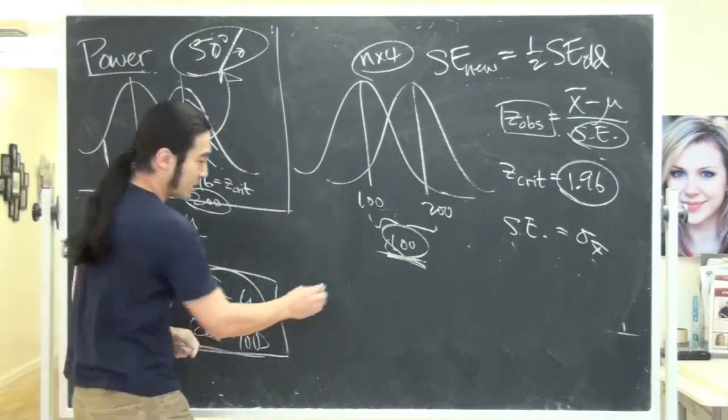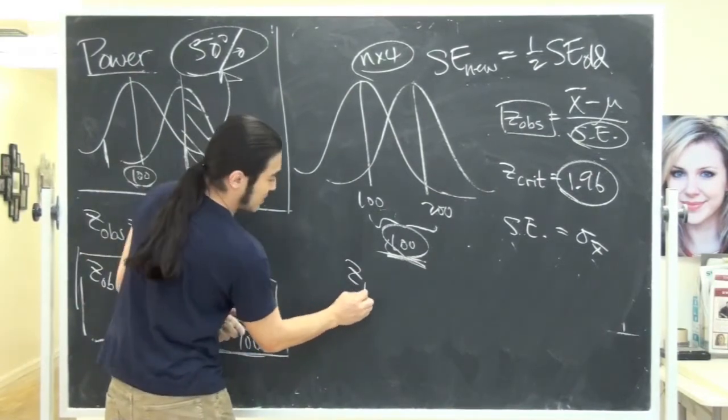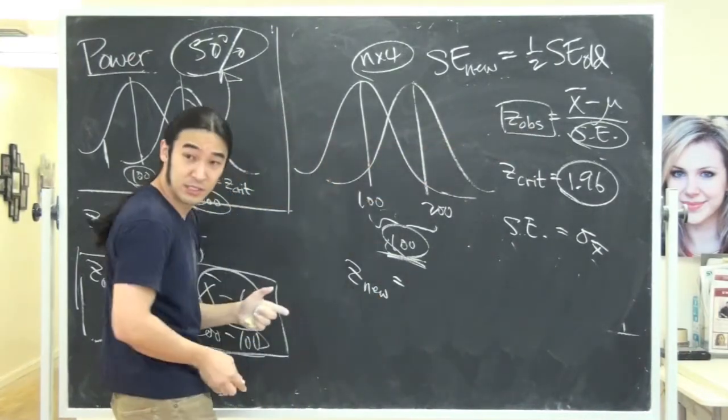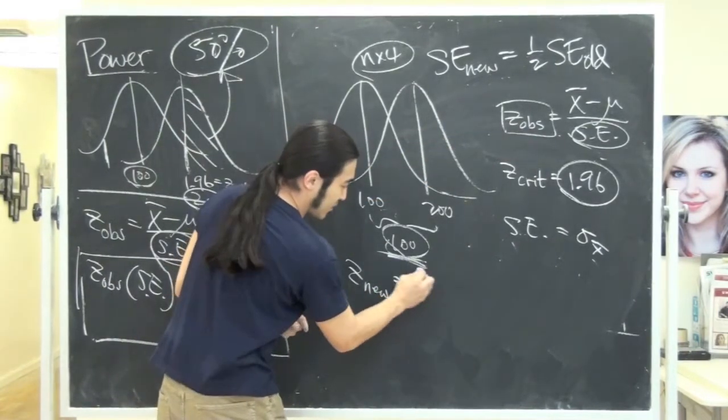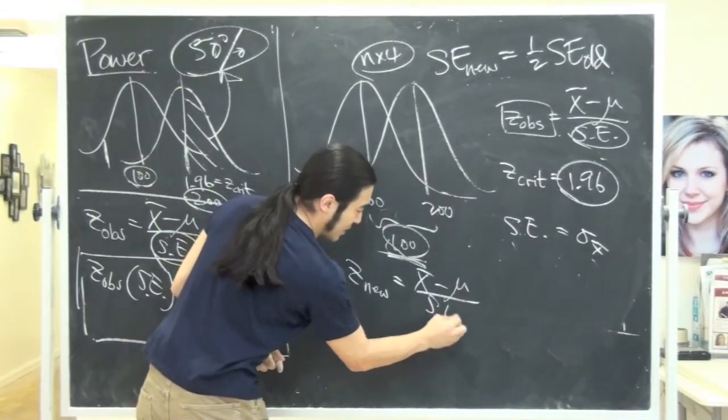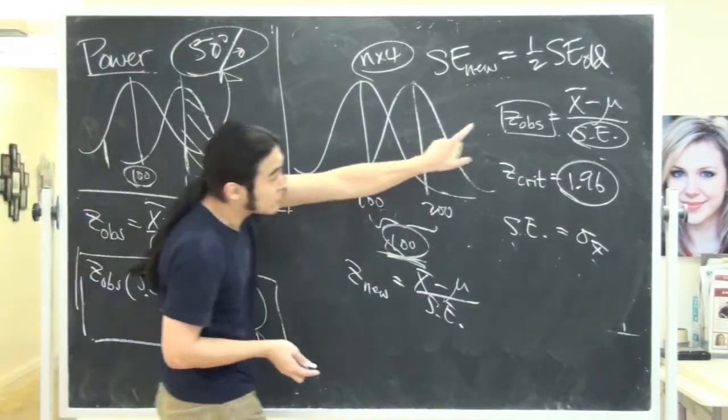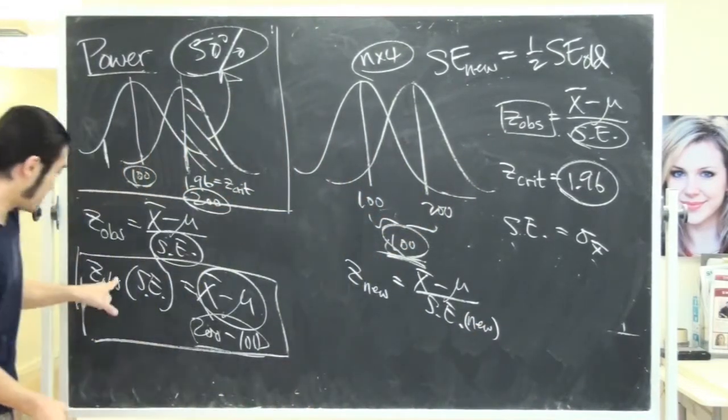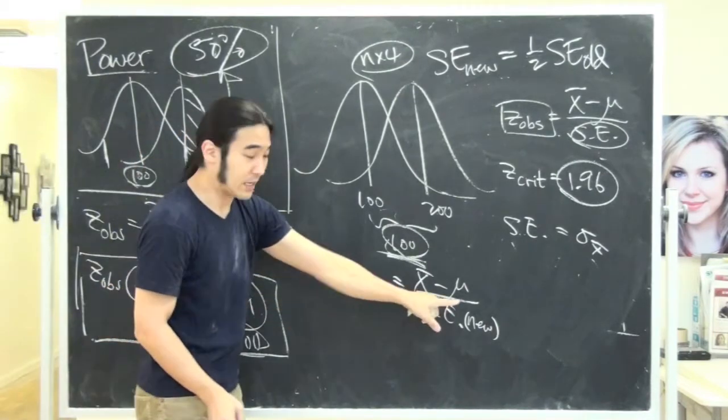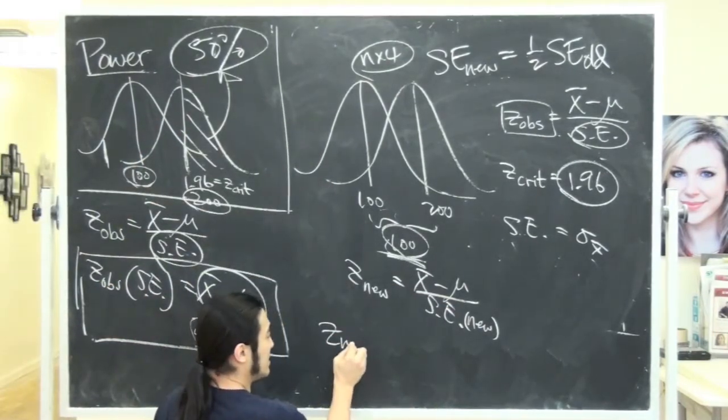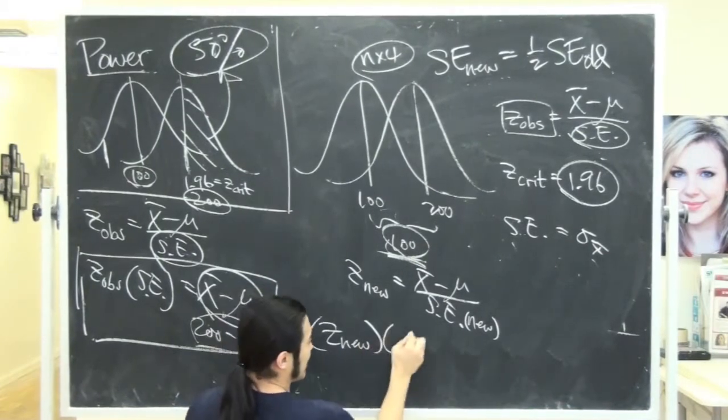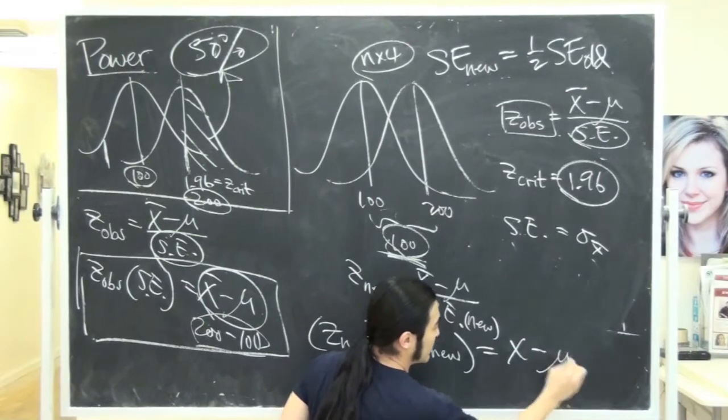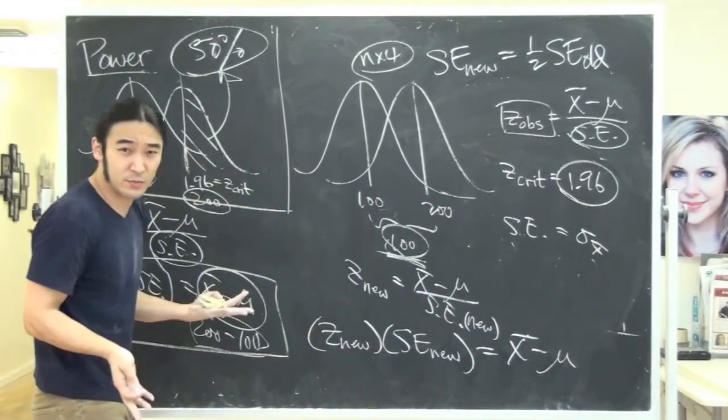Let's do this over here. So, what if I had z, let's call him z new, what we're going to compute. Because remember, this guy changes. So if that guy changes, I'll just call him z new. Z new should be x bar minus mu over, the standard error. But it's not the old standard error. It's z new because we changed the standard error. So this is standard error new. So this is old, and this is new.